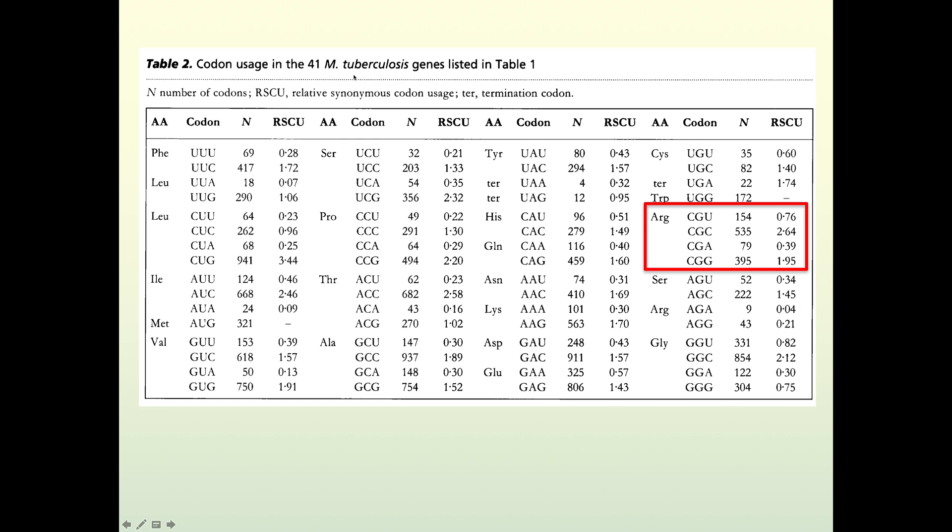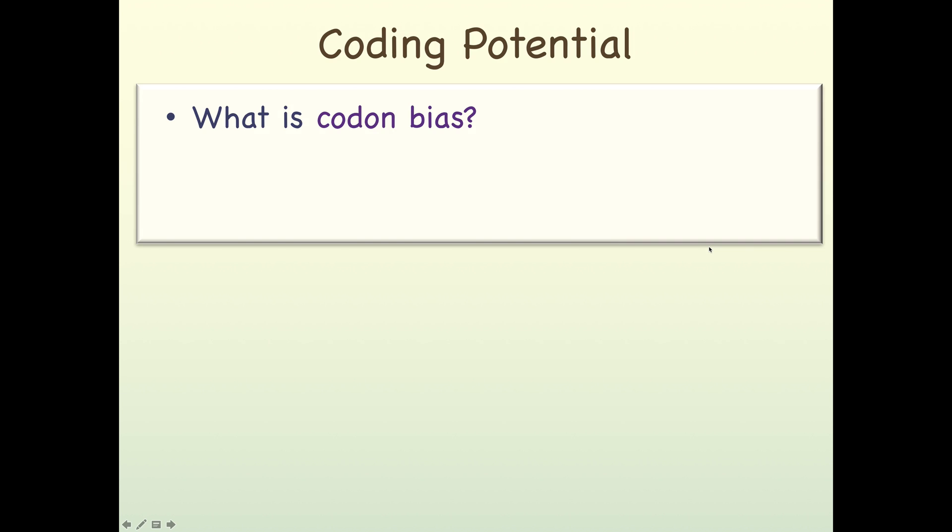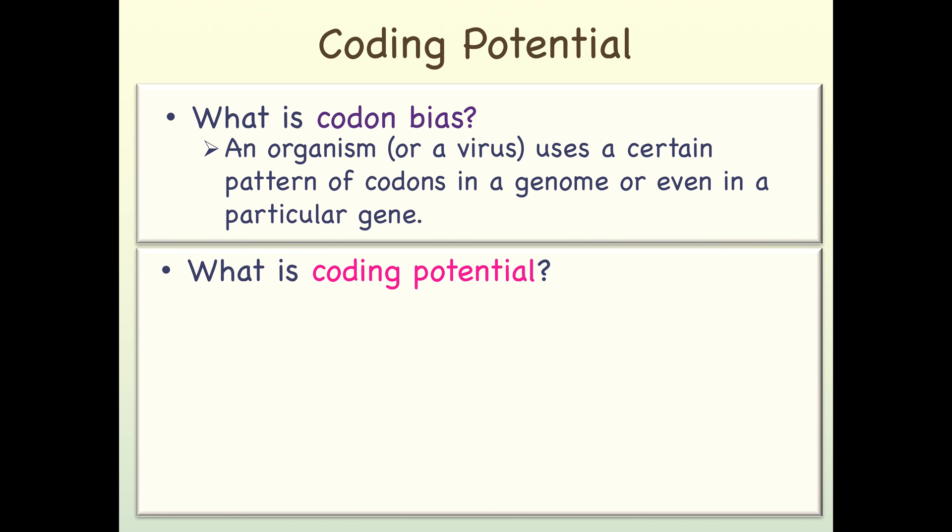Let's look at the codon usage table for M. tuberculosis. What I've done here is put a red box around the codon usage for those very same four codons that code for arginine. What we can see is that the codon CGC, all C's and G's, has a very high frequency, 2.64. The second most favored codon is CGG, 1.95. So the codons that are entirely C's and G's are favored over those that have the A's and U's. In an organism that has a preference for types of codons, this produces a pattern, particularly in those genes that have high expression levels.